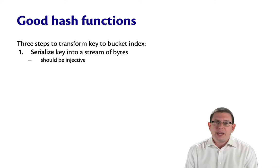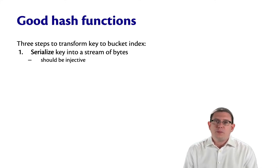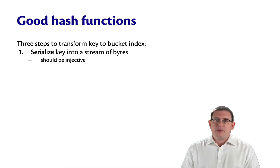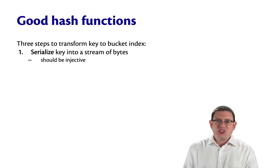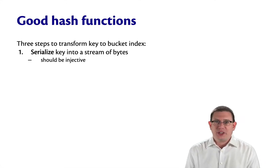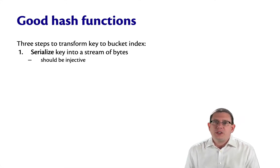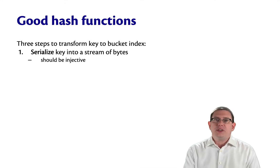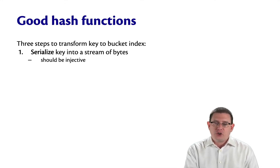Serialization is something that really should be injective. If you're going to load something from disk, you want to recover the same thing that you wrote to it originally. So you don't want to be unable to invert this piece of the hash function.